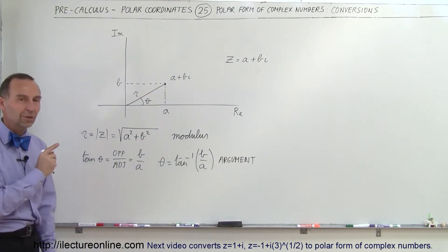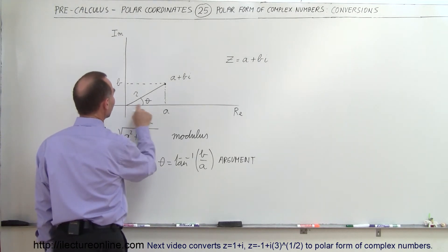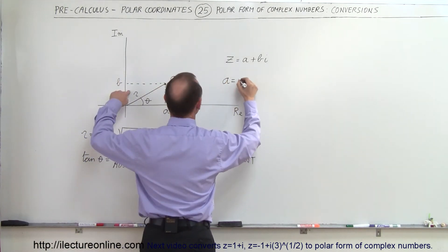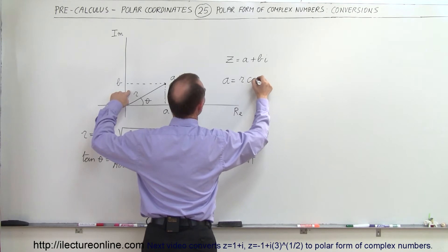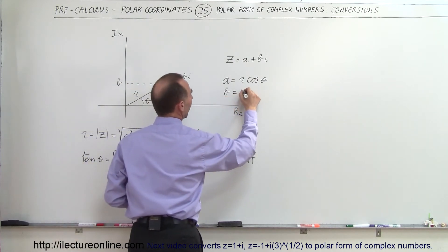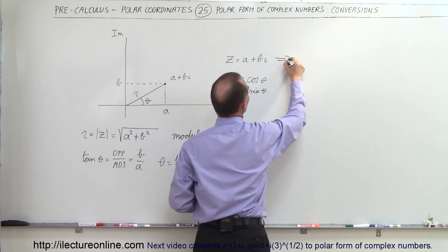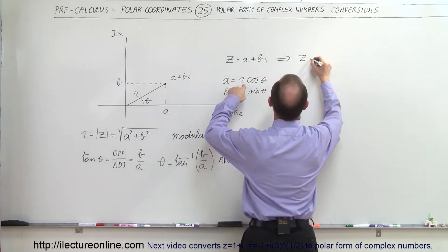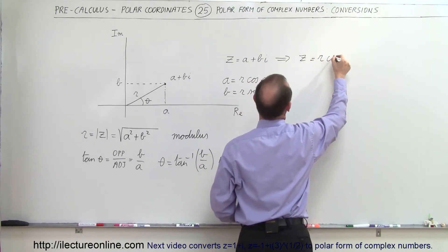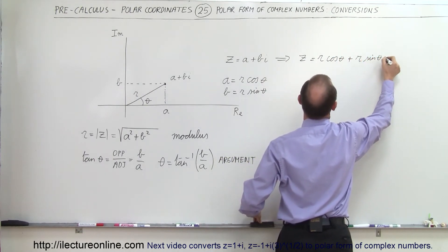Now how can we express a complex number in polar coordinates? We can see that the distance A is the adjacent side to the angle, so A can be considered the hypotenuse R times the cosine of angle theta. And B, since that's the opposite side of the angle, can be considered R times the sine of angle theta. This means we can write Z as equal to R times cosine of theta plus R times sine of theta times i.